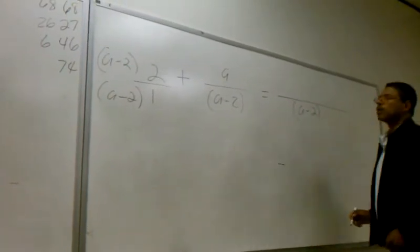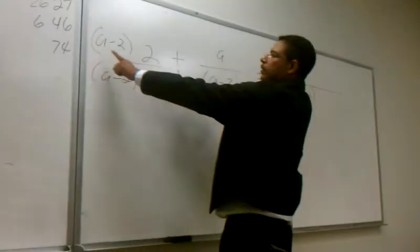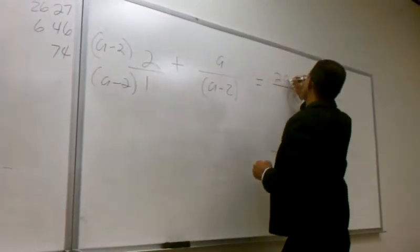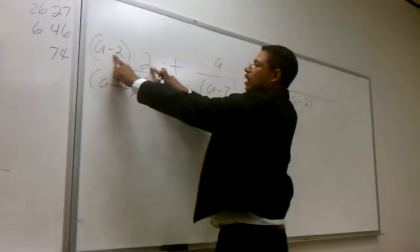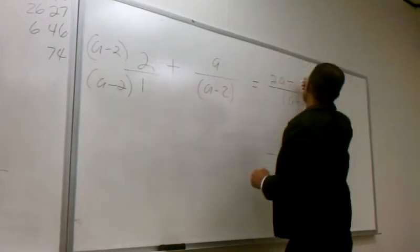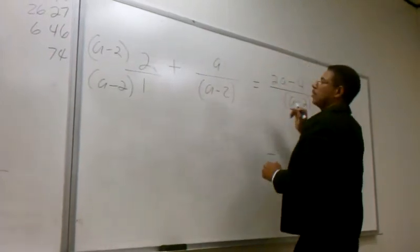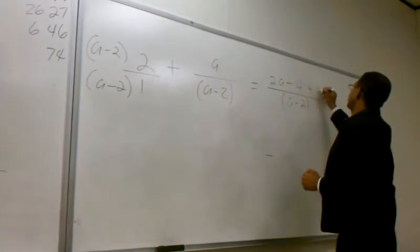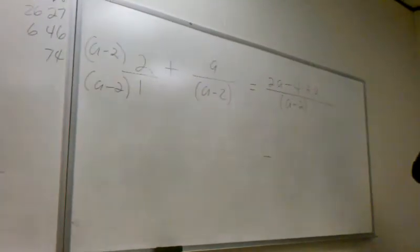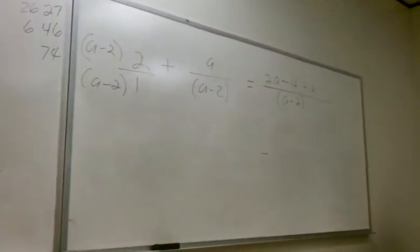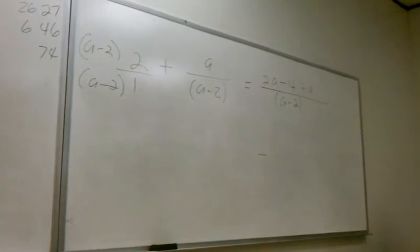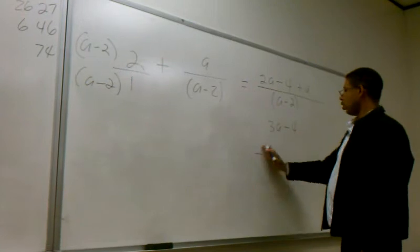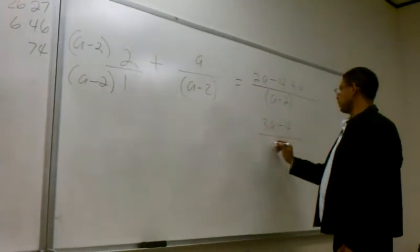Now let's focus on the numerator. Distributive property says a times 2 is 2a, right? So that's 2a. Minus 4 — by the distributive property we're going to get minus 4. Now over here we have plus a. Do I have any like terms? Yes. What's 2a and a? So we get 3a minus 4, all divided by my common denominator a minus 2.